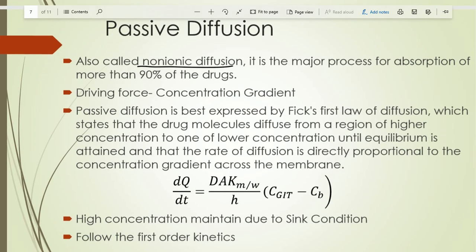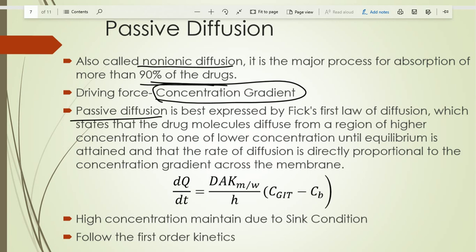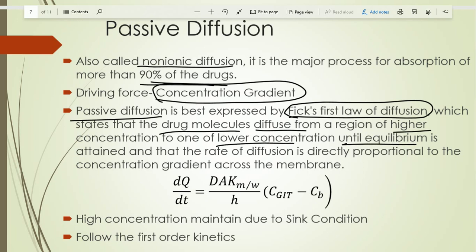The most important mechanism for drug absorption is passive diffusion, also called non-ionic diffusion. The maximum amount of drug — about 90% — is absorbed through passive diffusion. The driving force for passive diffusion is the concentration gradient: the drug moves from high concentration to low concentration. Passive diffusion is expressed by Fick's first law of diffusion, which states that drug molecules diffuse from higher concentration to lower concentration until equilibrium is achieved.